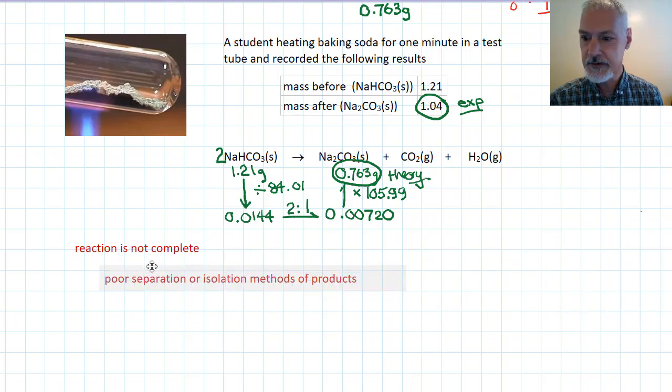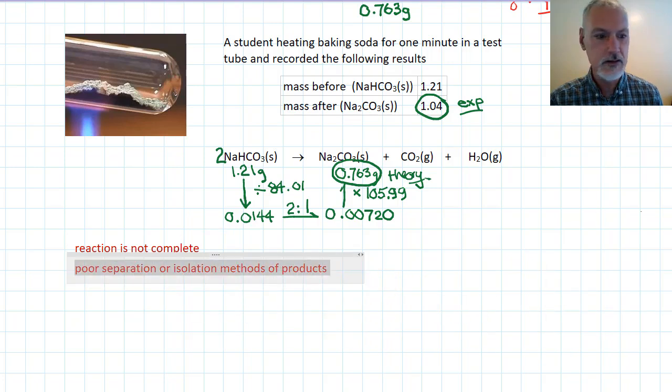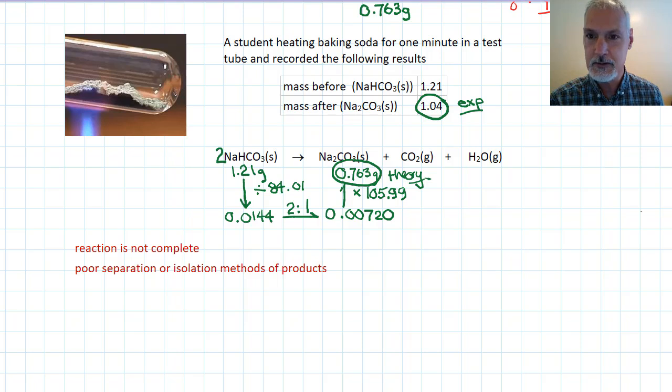Other potential things that could cause a difference in your theoretical and your experimental is poor separation methods. Perhaps the filter paper pores were too large and allowed some of the material to escape, or upon heating to drive off water, some chemical was actually driven off, spat out of the chemical upon heating.